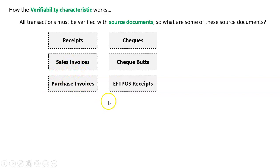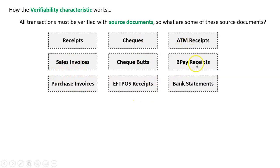What are these? How are they different? We'll get to that later. We'll have checks, check butts, FPOS receipts, ATM receipts, BPAY receipts, and bank statements. There'll be others too. But fundamentally, they're their evidence in business. That's how we prove things. All these source documents here.